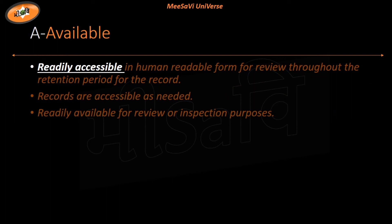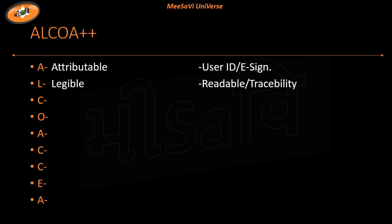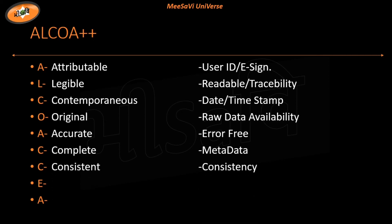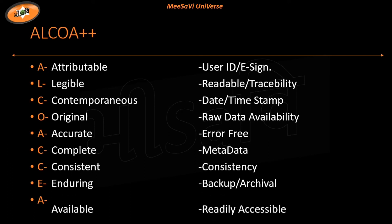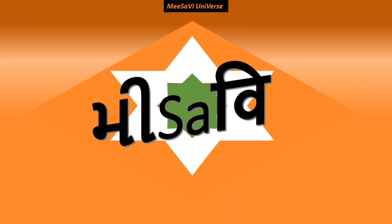So this is what ALCOA++ means. To summarize: Attributable means who did it and when; Legible means readable form; Contemporaneous means date and timestamp; Original means raw or primary data; Accurate means error-free data; Complete means all information and metadata; Consistent means uniform throughout; Enduring means data is not corrupted; and Available means readily accessible. I hope this was very helpful. If you liked our work, please subscribe. If you have any suggestions, leave a comment. Thanks!